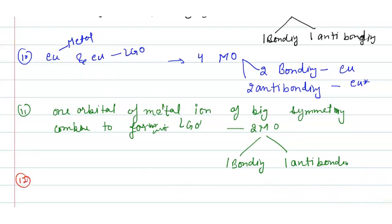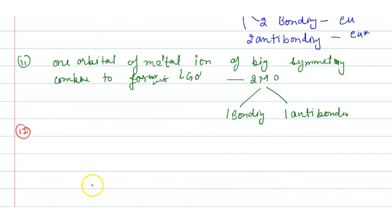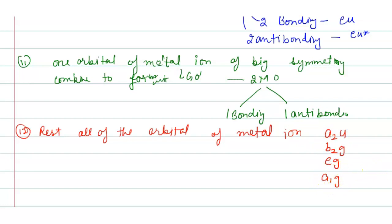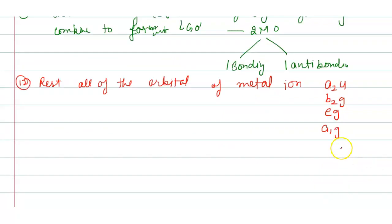The rest of the metal ion orbitals — a2u, b2g, eg, and a1g symmetry — are all non-bonding in the square planar complex.